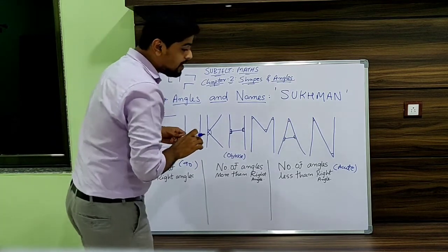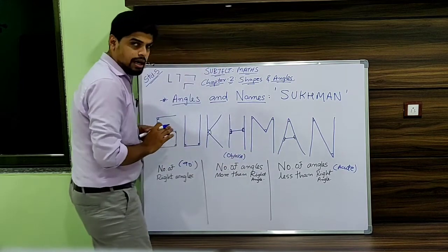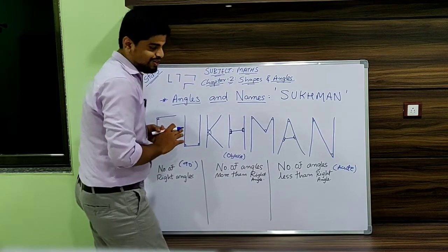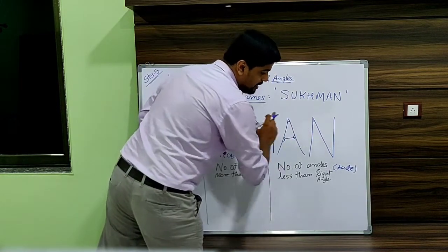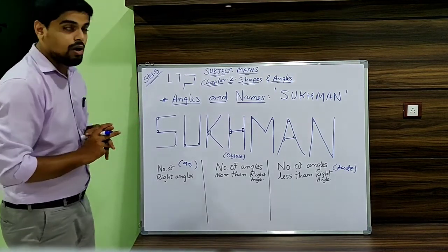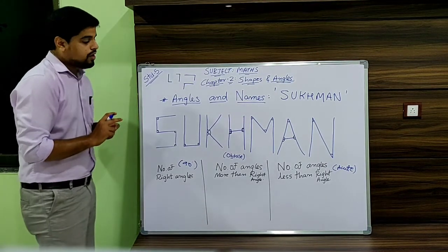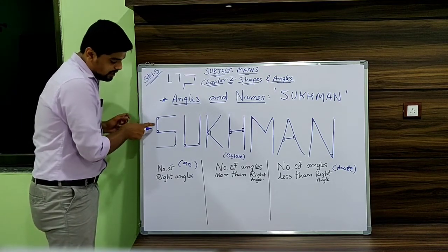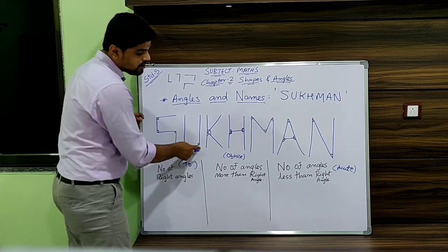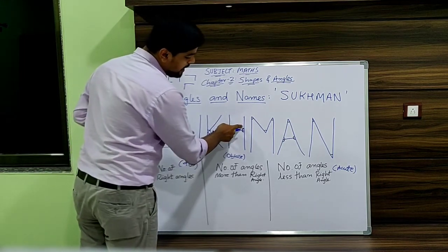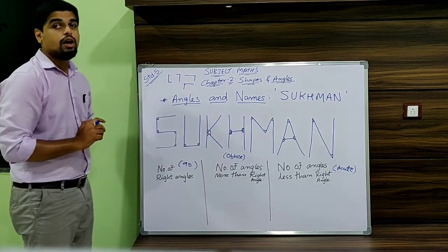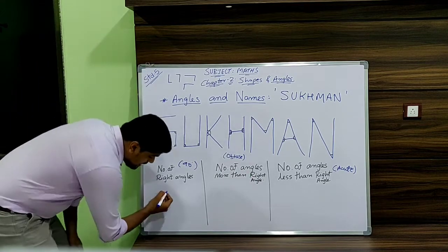Does M have any right angle? No. Does A have any right angle? No. Does N have any right angle? No. So let's count the total number of right angles in the given name: 1, 2, 3, 4, 5, 6, 7, 8, 9, 10. The total number of right angles in the given name Sukhman is 10.